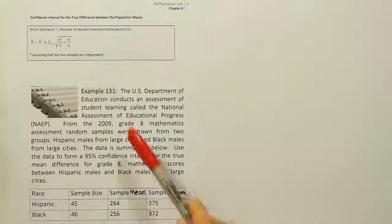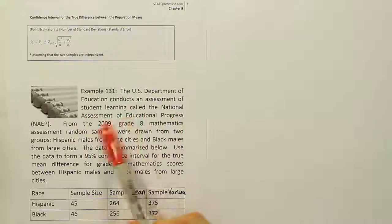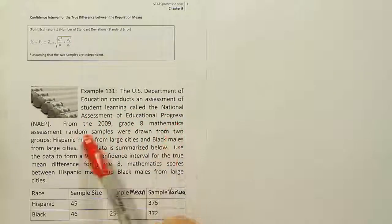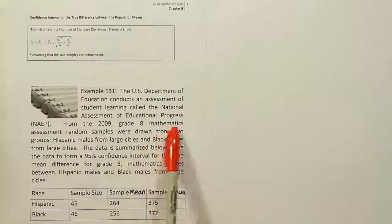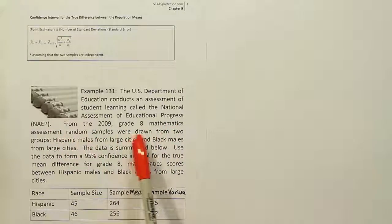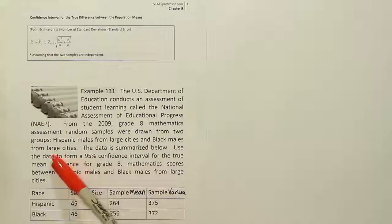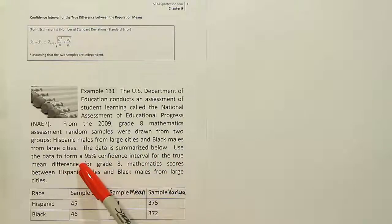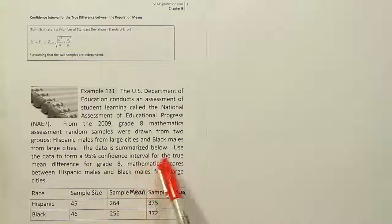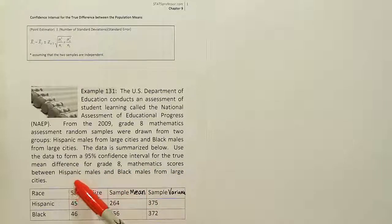Example 131. The U.S. Department of Education conducts an assessment of student learning called the National Assessment of Educational Progress, the NAEP. From the 2009 Grade 8 Mathematics Assessment, random samples were drawn from two groups: Hispanic males from large cities and black males from large cities. The data is summarized below. Use the data to form a 95% confidence interval for the true mean difference for Grade 8 Mathematics scores between Hispanic males and black males from large cities.